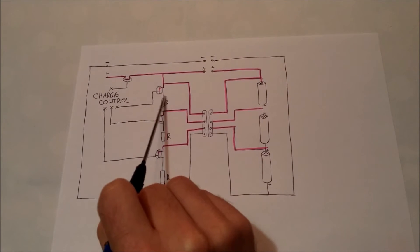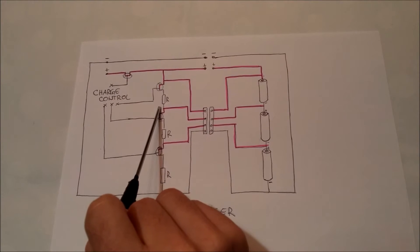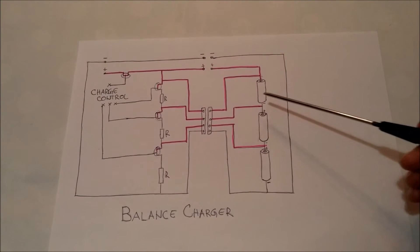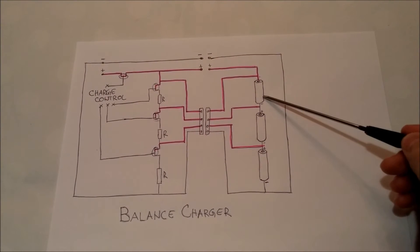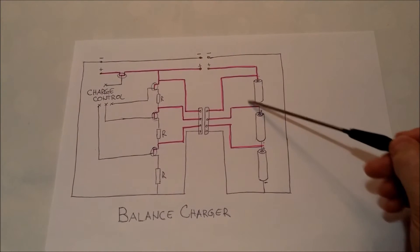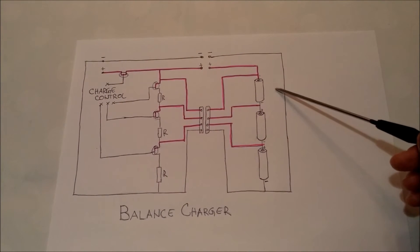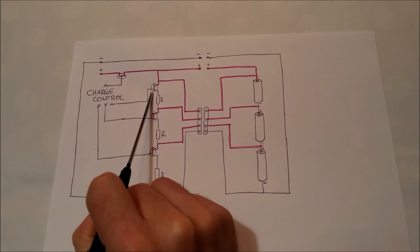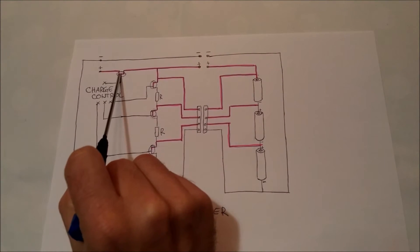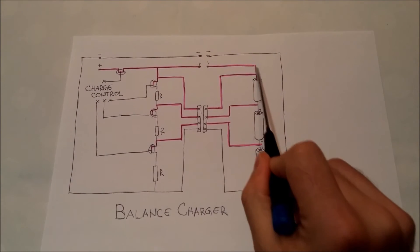This resistor jumps into action and tries to discharge this battery. When the battery gets to 4.2 volts, the switch goes off and charging continues through this line.